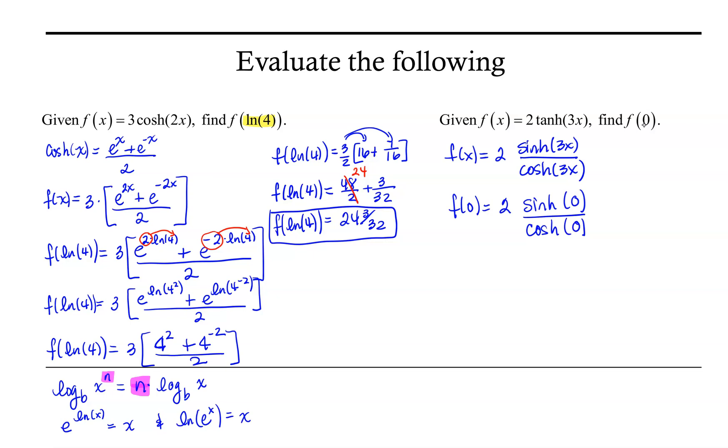Now we need to know what sinh and cosh of 0 are. Sinh of 0 is e to the 0 minus e to the negative 0 over 2, which is 1 minus 1 over 2, which is 0. And cosh of 0 is e to the 0 plus e to the negative 0 over 2, which is 1. So we could say that f of 0 is 2 times 0 over 1, which is 0.